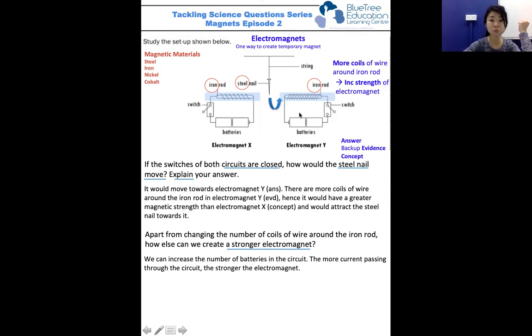A quick recap: there are two ways to increase the strength of an electromagnet. One way is to increase the number of coils around the temporary magnet. The second way is to increase the number of batteries in the circuit.